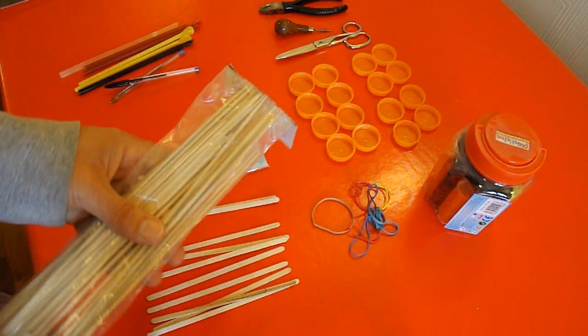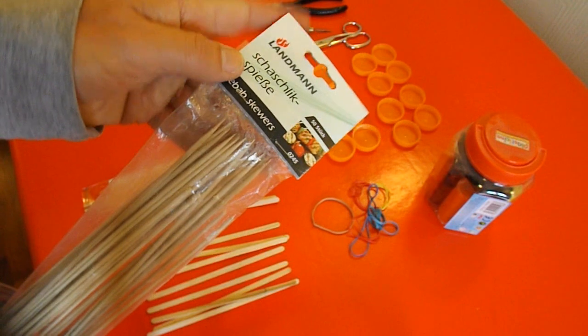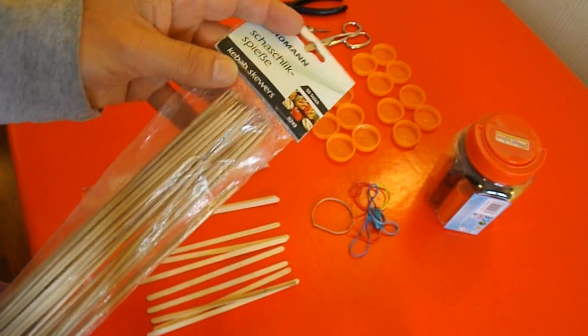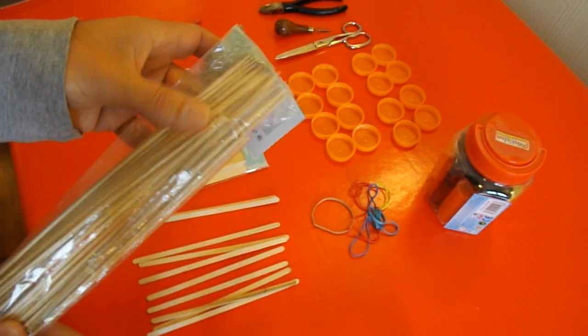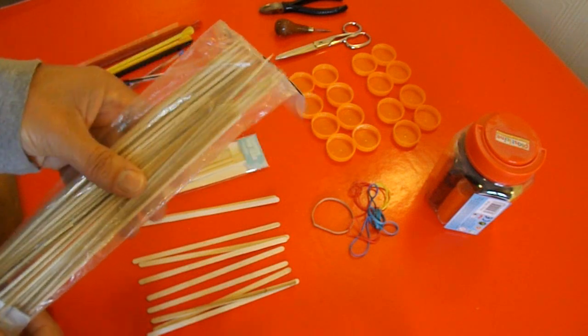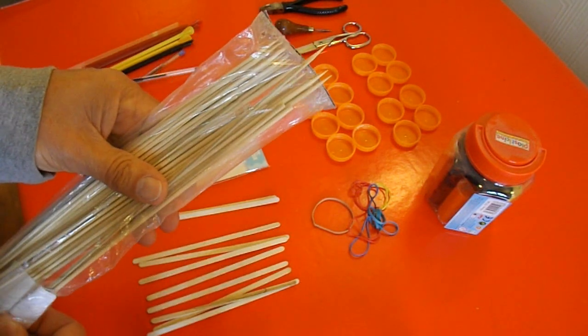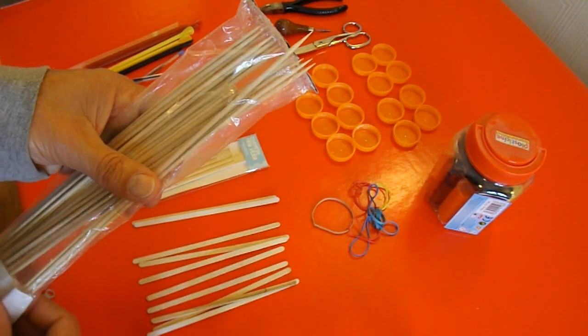Another one of my favorites: barbecue skewers, or as these are labeled, kebab skewers, but they're bamboo skewers. You can get flower canes from the garden centers that are very similar.